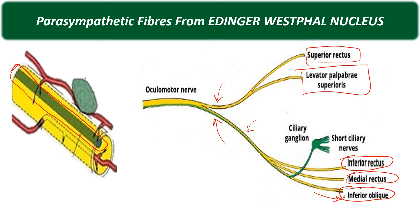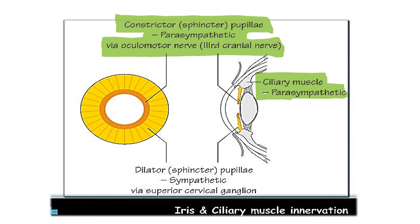After traveling to the ciliary ganglion, the parasympathetic fibers relay there. The post-ganglionic parasympathetic nerve fibers supply two structures: first, the sphincter pupillae, which is responsible for constriction of the pupil; and second, the ciliary muscle within the eye. Most of the post-ganglionic parasympathetic fibers coming out of the ciliary ganglion via the short ciliary nerves supply the sphincter pupillae muscle, with less supply going to the ciliary muscle.